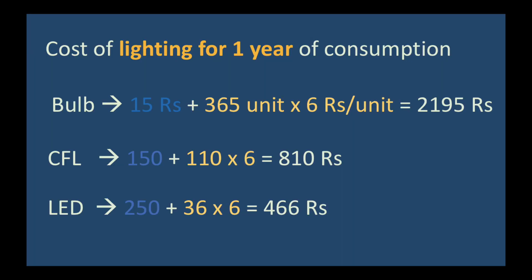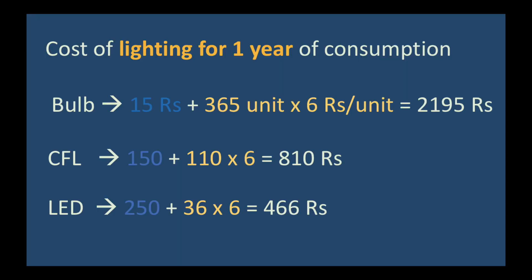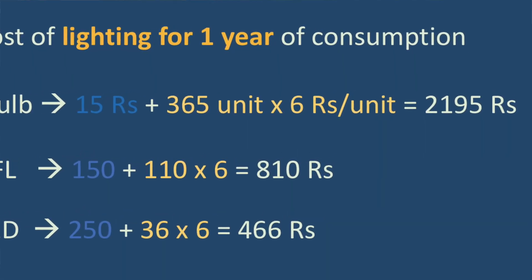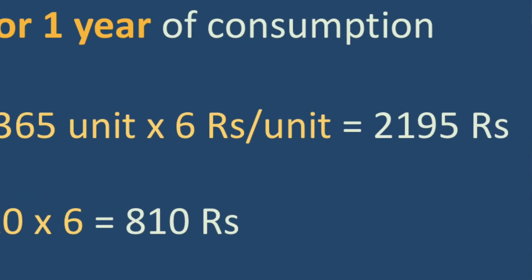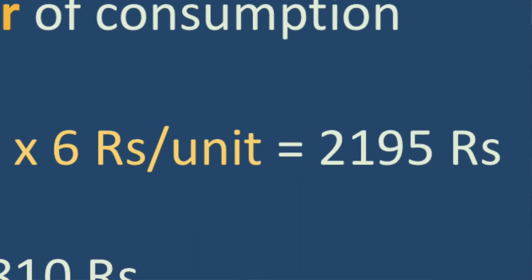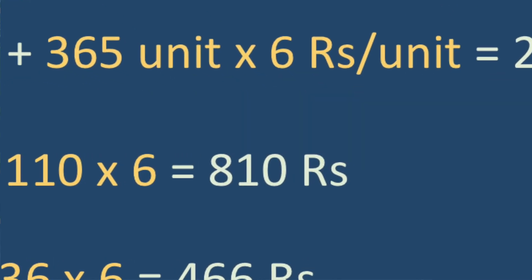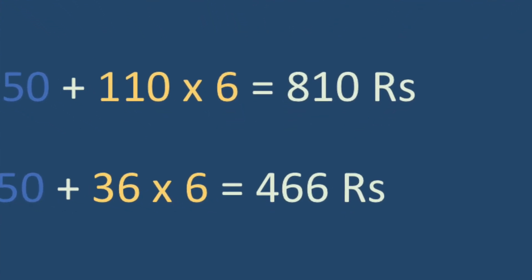The fixed cost is shown in blue and the running cost in orange. The fixed cost of an incandescent bulb is about 15 rupees, a CFL is about 150 rupees for 30 watts, and an LED is about 250 rupees for 10 watts. At 6 rupees per unit, the running cost differs significantly: the incandescent bulb costs 2,195 rupees per year, the CFL costs 810 rupees per year, and the LED costs only 466 rupees per year.